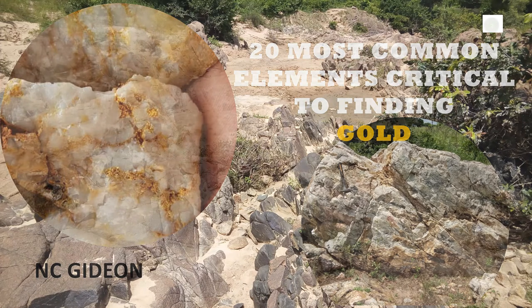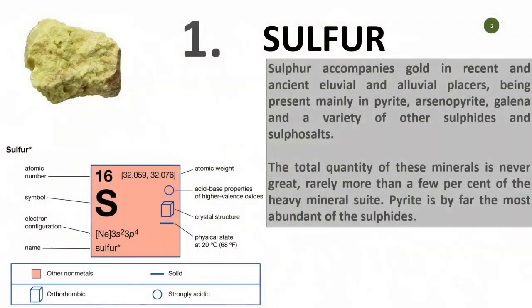Number one: sulfur. Sulfur has an atomic number of 16 and it accompanies gold in recent and ancient alluvial places. It is present mainly in the form of pyrite, arsenopyrite, galena, and a variety of other sulfides.